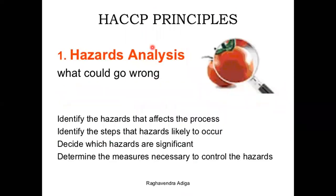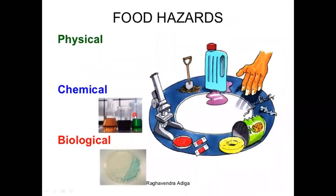First we will see hazard analysis — conducting a hazard analysis means we have to identify the hazard and how it will affect your food products. We make identification of which kind of hazard it may be: physical, chemical, or biological. We have already covered food hazards in previous lectures. Physical hazards include metallic parts, broken glass, hairs, and bones.